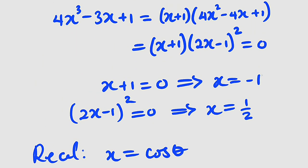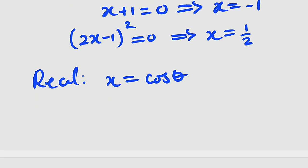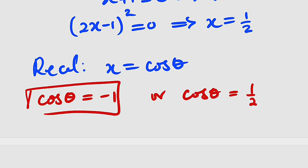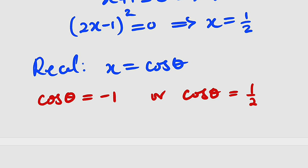X is either negative 1 or 1 over 2, giving two equations: cosine theta equals negative 1, or cosine theta equals 1 over 2. Starting with the first: only cosine of 180 degrees gives negative 1.